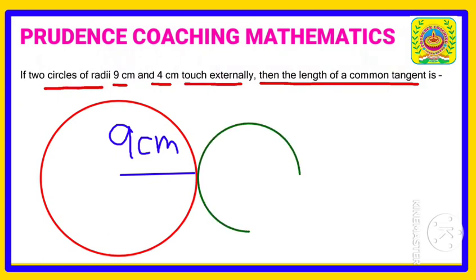another circle of radius 4 centimeters, which is a smaller one, and if both circles touch each other externally, that means at a point they are touching each other, you are asked to find out the length of